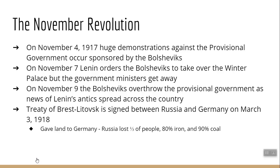The November Revolution is the big one. On November 4th, 1917, there were huge demonstrations against the provisional government sponsored by the Bolsheviks — workers took to the streets chanting 'down with the government.' On November 7th, Lenin ordered the Bolshevik party to take over the Winter Palace, where the government was stationed. The government ministers escaped — ironically in cars provided by the US Embassy. On November 9th, Lenin overthrew the provisional government, was proclaimed the new leader of Russia, and people throughout the country joined him.